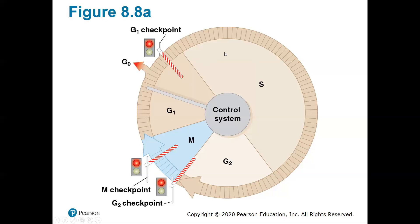If you pass the G1 checkpoint, the next checkpoint is at the end of G2. Once the cell has undergone synthesis and copied all of its DNA, there's another checkpoint that makes sure DNA reproduction was correct. If DNA synthesis went wrong, you won't be able to pass this checkpoint. Also, the cell needs a signal from the outside — it could be from a neighboring cell indicating that you're now ready to go into mitosis because cell division is needed. That is the G2 checkpoint.